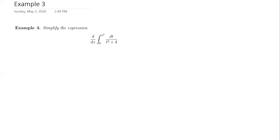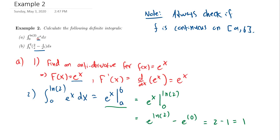Hello class. This is going to be the last video on section 5.3. I just want to do one more example. In the previous video, we did examples using the second part of the fundamental theorem of calculus, where in order to find the definite integral of a continuous function on the interval you're working on, you just find an antiderivative and evaluate at the endpoints.